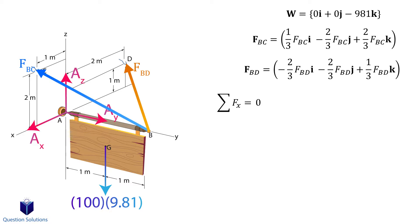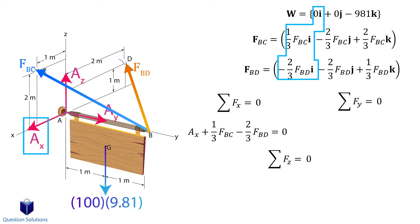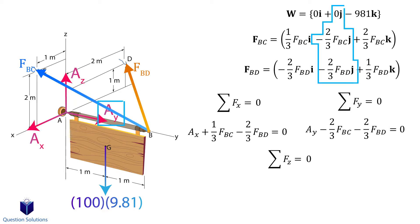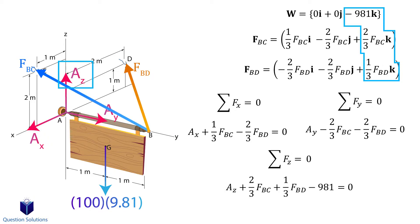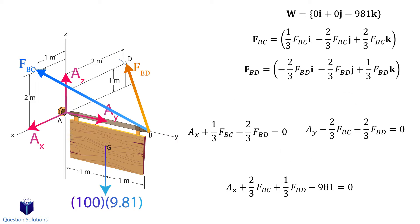Now we can equate the components. For this sign to not move, all the forces in the x direction must add up to zero — the same for the y direction and the z direction. For the x-axis forces we have the x-axis reaction at A, then the i component of wire BC and the i component of wire BD, all added together equal zero. Next, y-axis forces — same process. Lastly, z-axis forces — don't forget the weight of the sign.